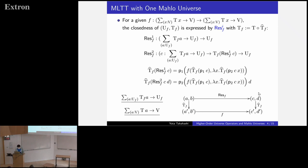Then, if we decode this family, then we obtain a family of sets in V, which is equal to the family obtained by decoding AB first and then applying F. So, this is the closeness of this subuniverse.